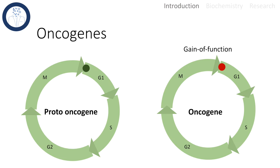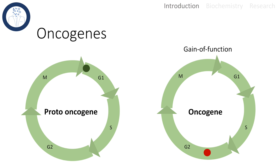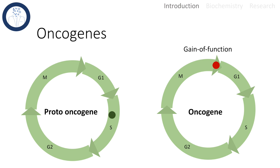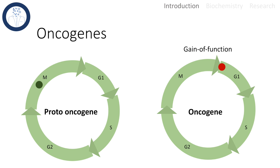We can illustrate it here. On the left we have the normal proto-oncogenes promoting the cell cycle. On the right we see the mutated oncogenes that lead to an uncontrolled and accelerated cell division. This can cause tumors in the tissue.